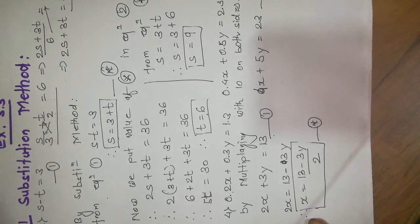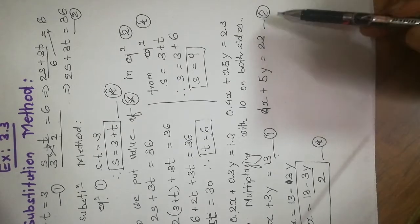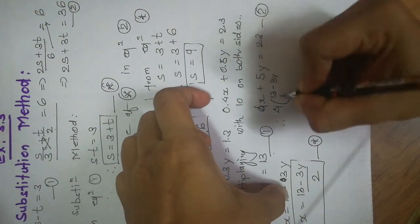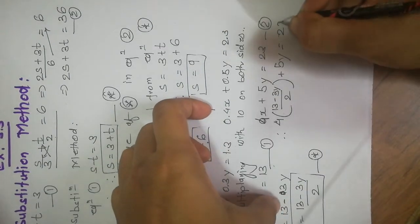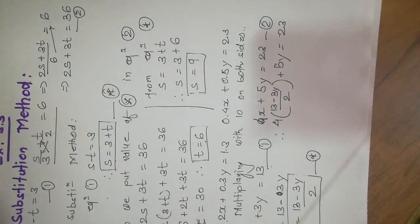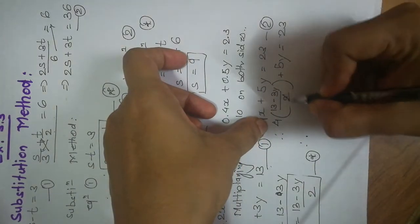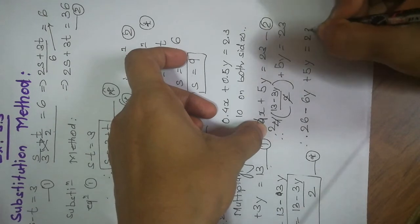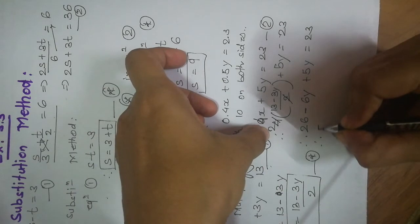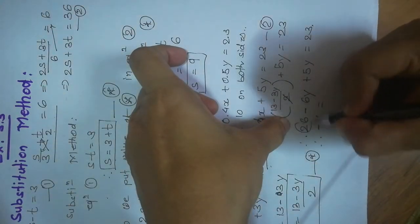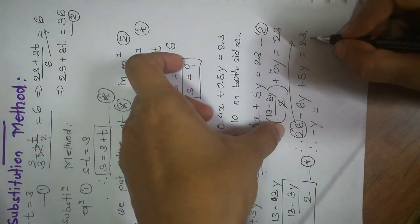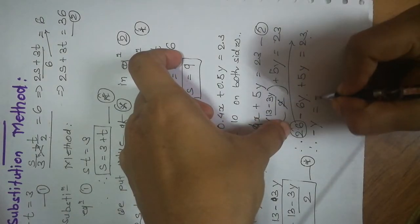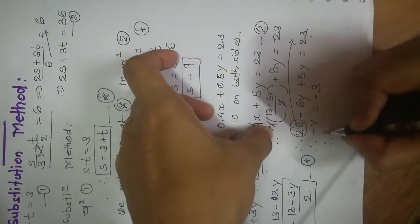Now put this value of x into equation 2, the remaining one. From equation 2: 4 times (13 minus 3y) divided by 2, plus 5y, equals 23. The 4 and 2 cancel to give 2, so we get 2(13 minus 3y) plus 5y equals 23, which gives 26 minus 6y plus 5y equals 23. Therefore minus y equals 23 minus 26, that is minus 3. Since both sides have a minus, they cancel, so y equals 3.